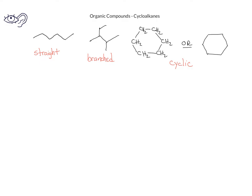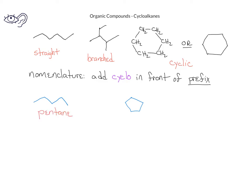When we have a cycloalkane, we follow the same naming conventions that we did with straight chain or branched alkanes. The difference is that we add the word cyclo in front of the prefix used to indicate the number of carbons in the main parent chain. For example, a straight chain 5-carbon alkane like this would be named pentane. If it's in a cyclic form, we would name it cyclopentane.